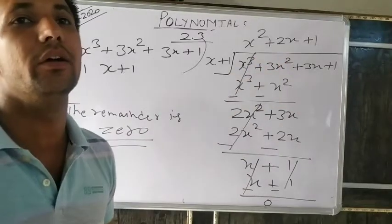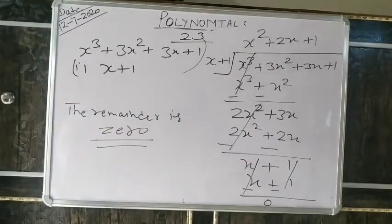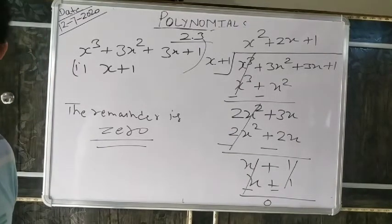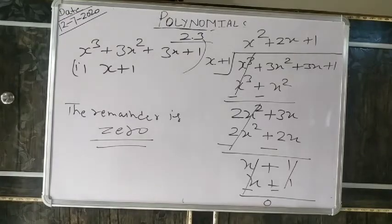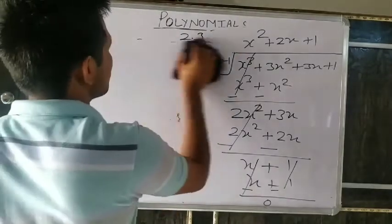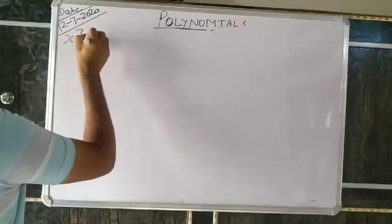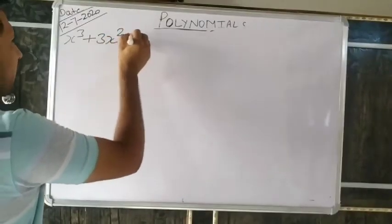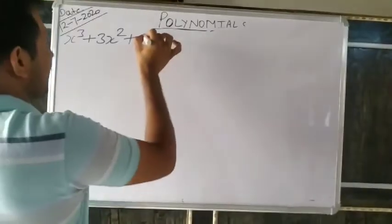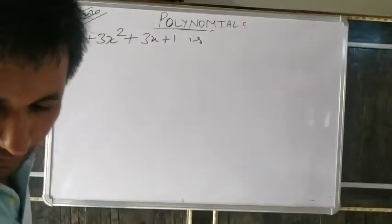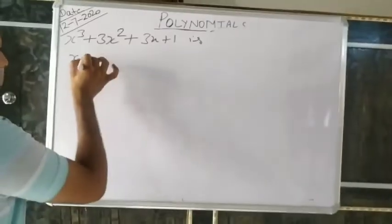Like this, we divide polynomials by the long division method. Now we are solving part 4. Look at part 4 everyone: x³+3x²+3x+1 is divided by x+π. We will divide x³+3x²+3x+1 by (x+π). Write same as it is and follow the same process.